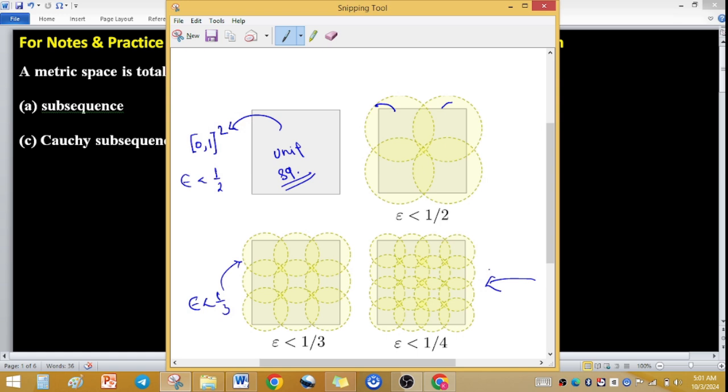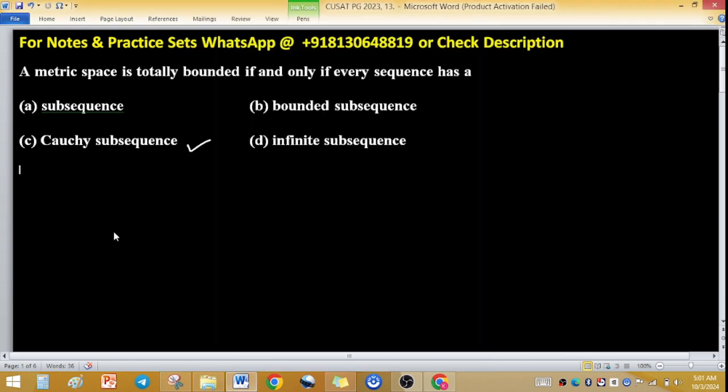So the meaning is that if a set is covered with a finite number of balls, then we call it totally bounded. And this statement, a metric space is totally bounded if and only if every sequence has a Cauchy subsequence. Option C will be correct here.